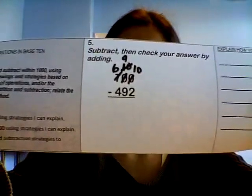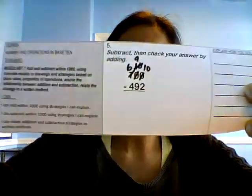So 0 looks at the 10 and asks, can I borrow? Okay. So now the 10 becomes a 9, and the 0 in the 1s place becomes a 10. Just like that. Now we can subtract.